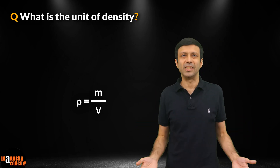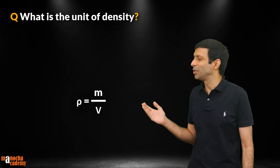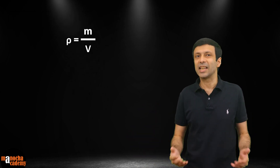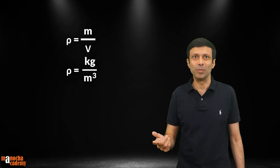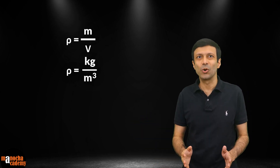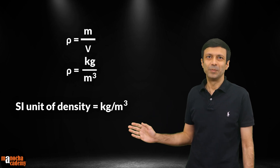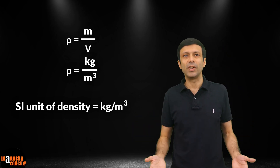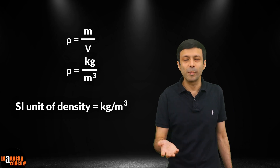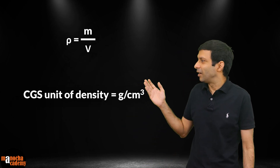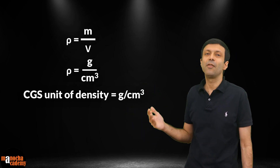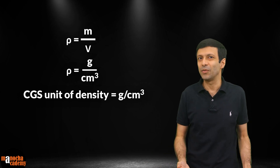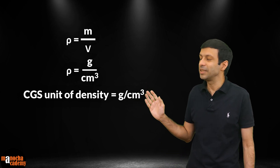Now what is the unit of density? You can easily work it out by using the formula. The SI unit of mass is kilogram and the SI unit of volume is meter cube. Density is mass divided by volume, so the SI unit of density is going to be kg per meter cube. The CGS unit of density is also commonly used — it's going to be gram per centimeter cube because mass is measured in gram and volume in centimeter cube. So the CGS unit of density is gram per centimeter cube.